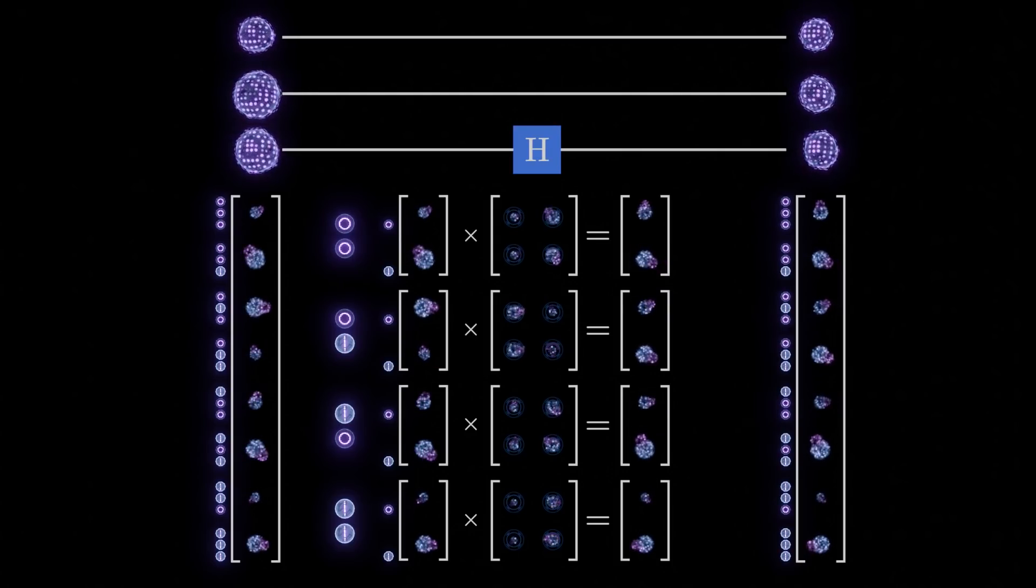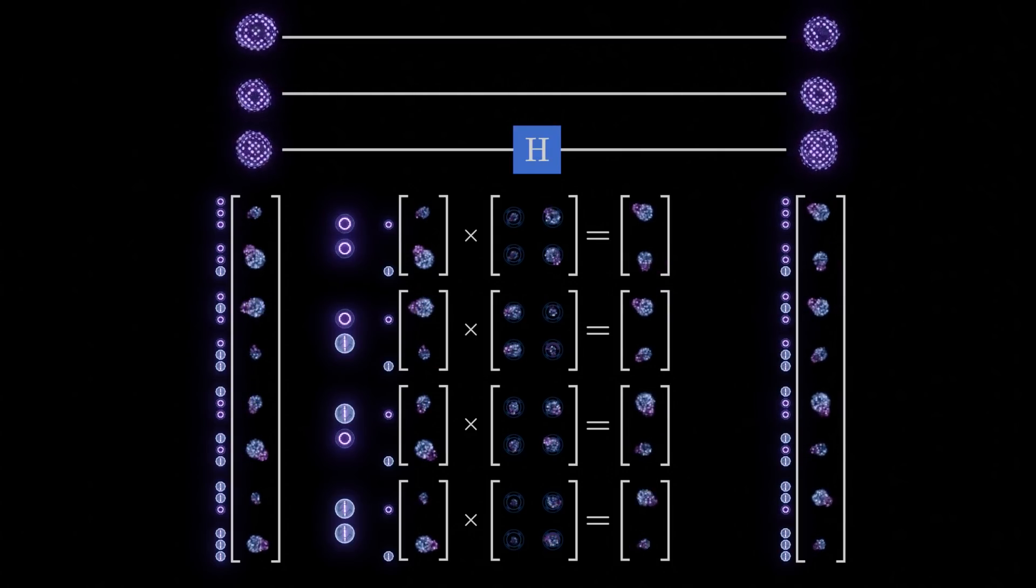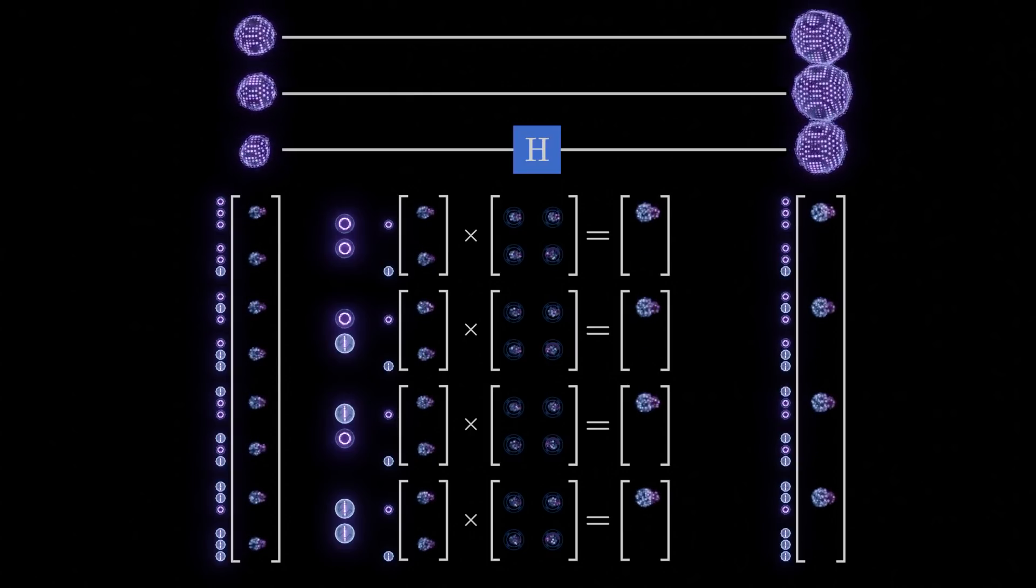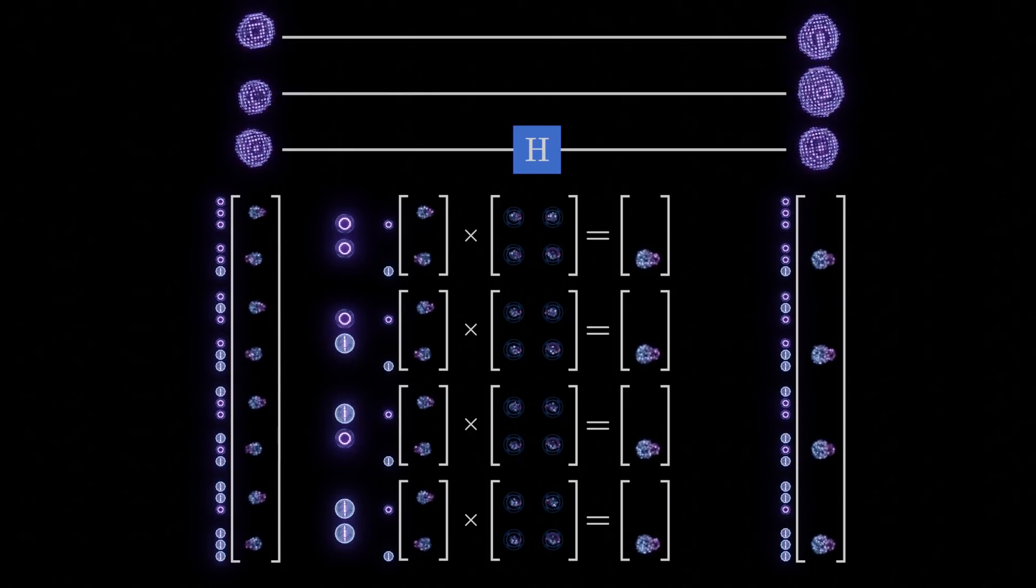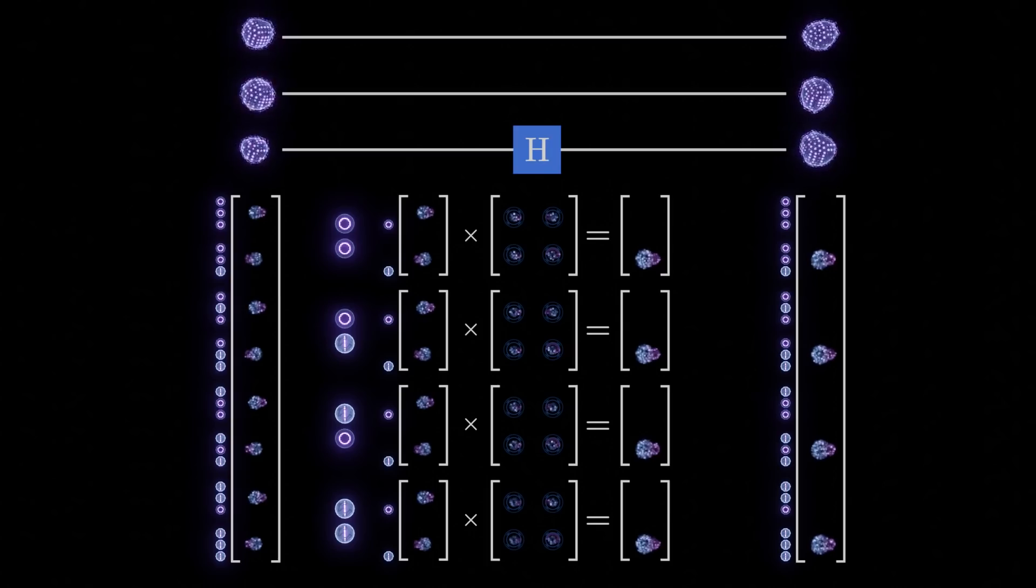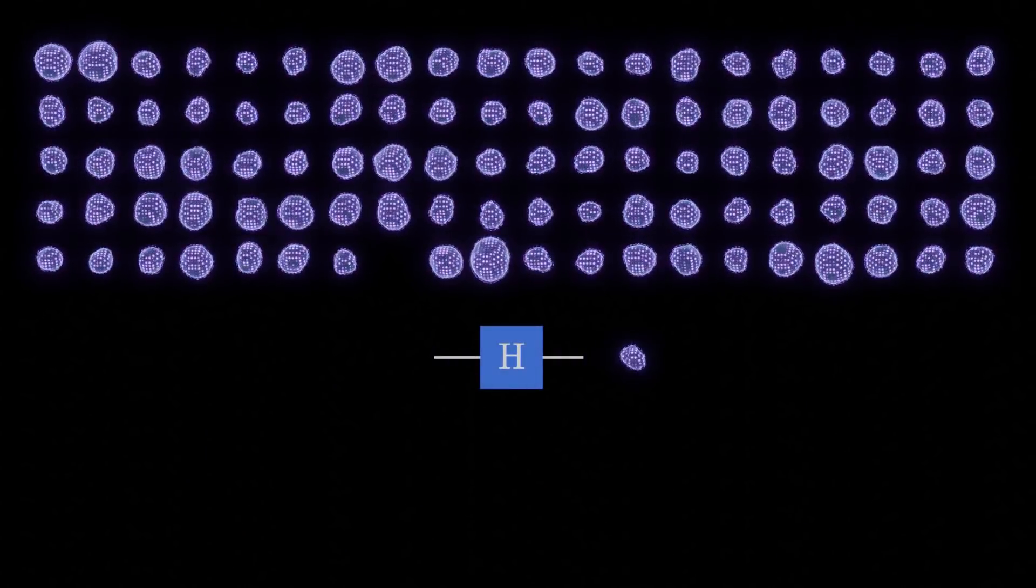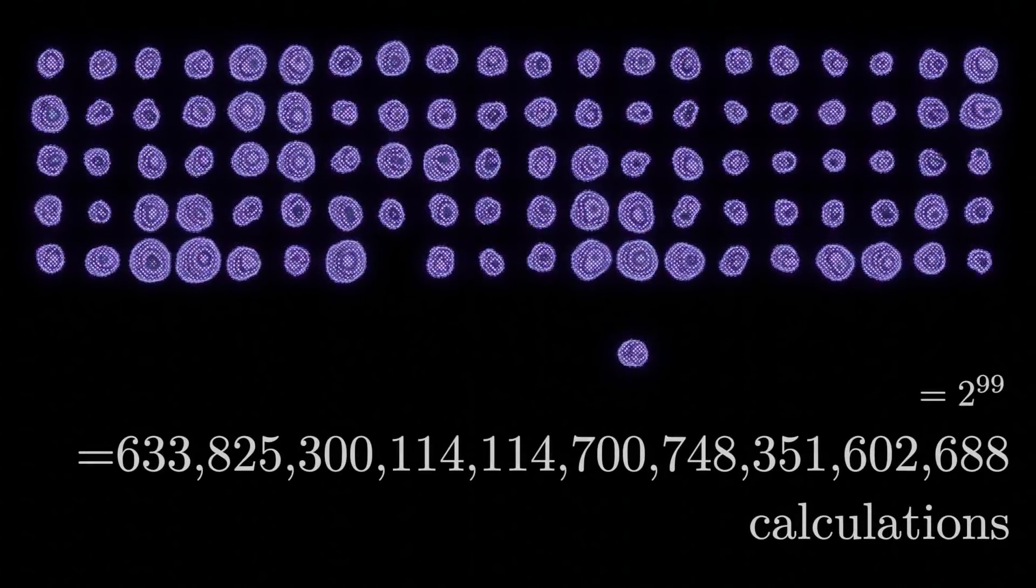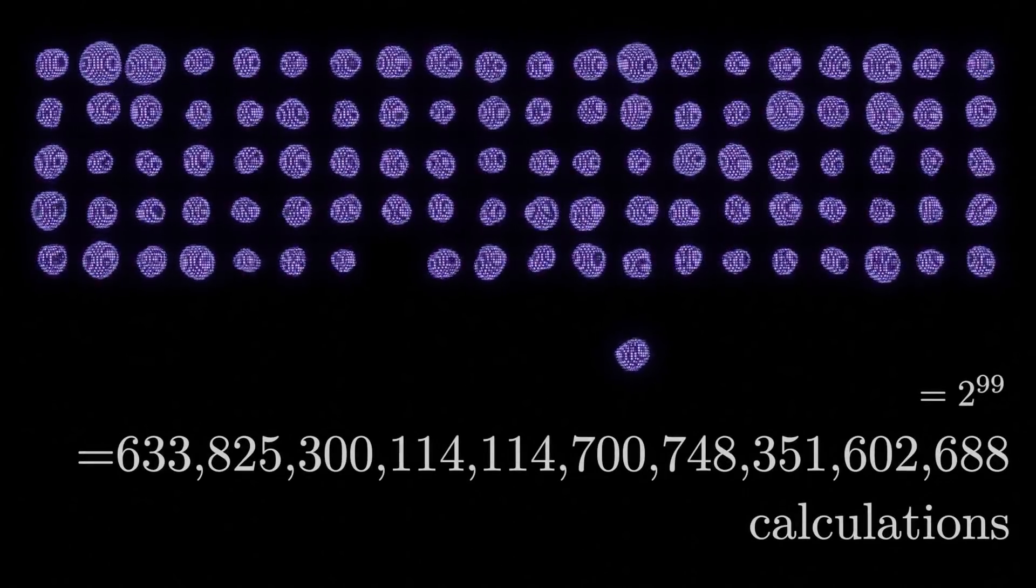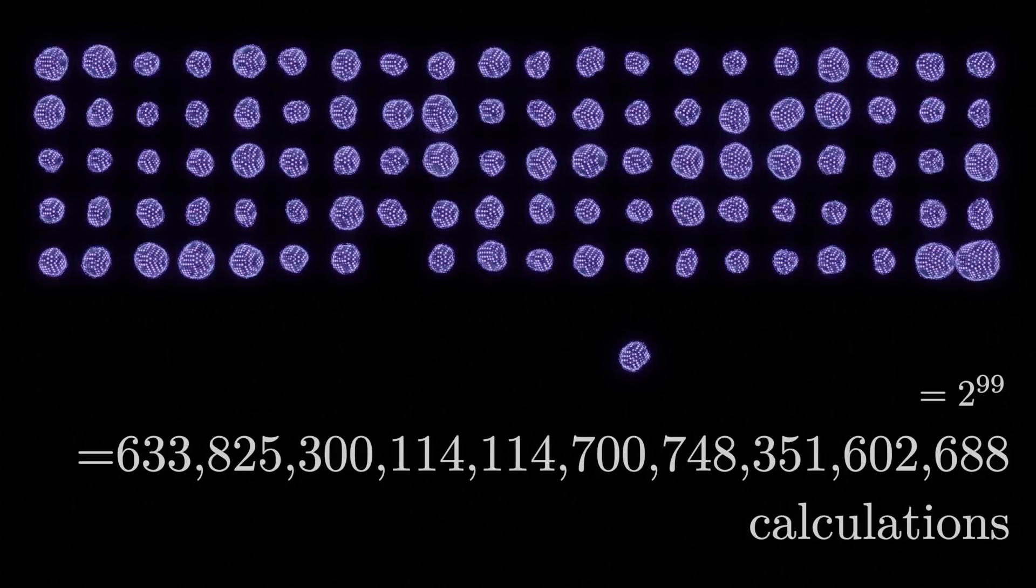This shows some of the incredible potential of quantum computing. By passing a single bit through a single logic gate, we have effectively performed four separate calculations. If we were to scale this up to a system with only 100 qubits, passing a single bit through a single logic gate would effectively perform over 633 octillion calculations.